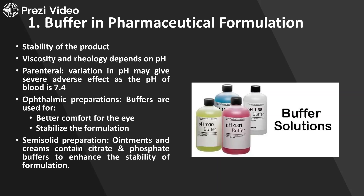Apart from that, other stability parameters such as viscosity and rheology also depend on pH. Variation in pH in parenteral preparations may give rise to severe adverse effects. The pH of blood is 7.4, so whenever any parenteral formulation is injected, it is very important for the formulation to have a stabilized pH. Acidic or basic pH can lead to very severe adverse effects. So buffering agents play a vital role in maintaining stability and preventing adverse effects, similar to the role of salt in a recipe.